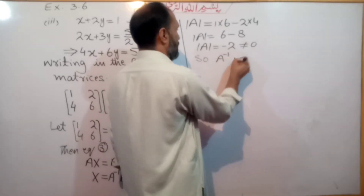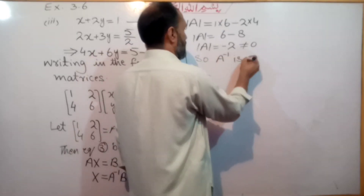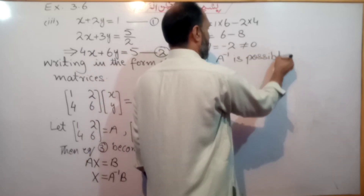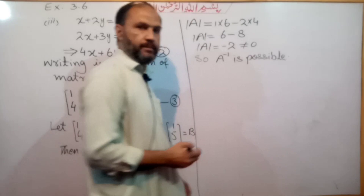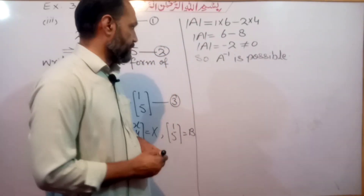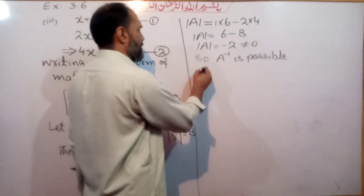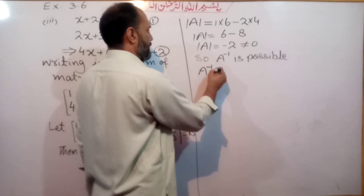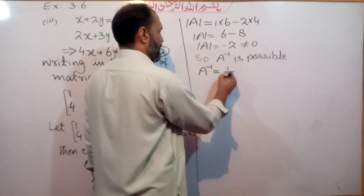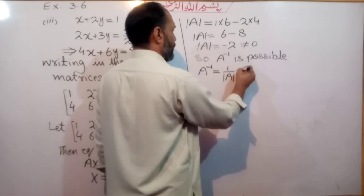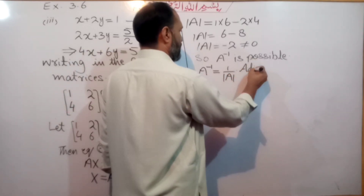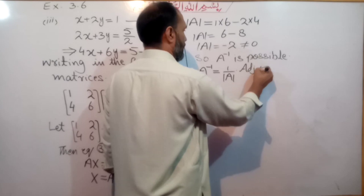Since the determinant is minus 2, which is not equal to zero, A inverse is possible. The formula for A inverse is 1 over the determinant of A, multiplied by the adjoint of A.